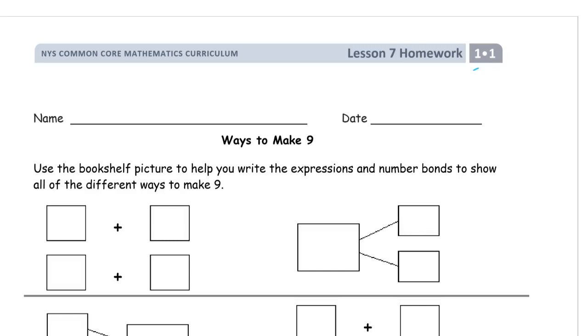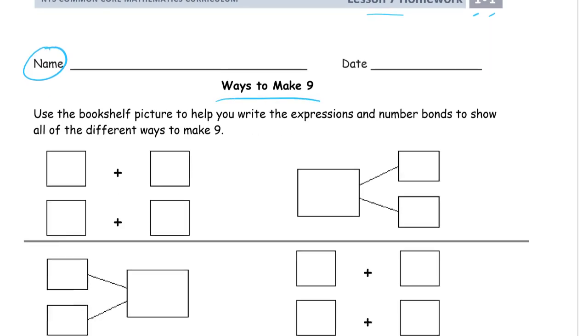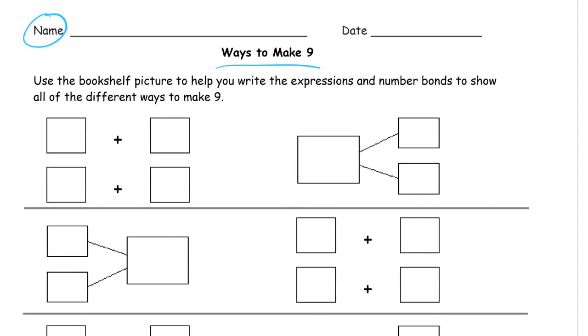Welcome to the homework for Grade 1, Module 1, Lesson 7. Write your name first. This homework is going to be all about ways to make 9. Our first page is, it's our only page, use the bookshelf picture to help you write the expressions and number bonds to show all the different ways to make 9.